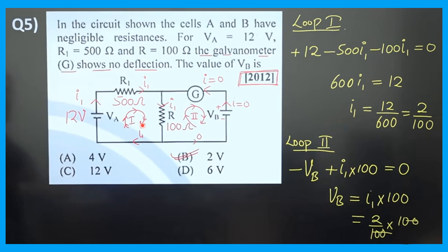For loop 1: the path moves from negative to positive terminal of the cell, so EMF is positive: plus 12. Then the current and path follow the same direction through R1 equals 500 ohm: minus 500I. Similarly through R equals 100 ohm: minus 100I. This closed path equals zero according to Kirchhoff's second law.